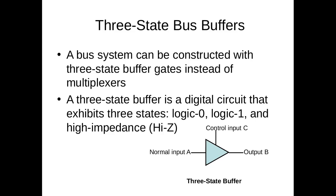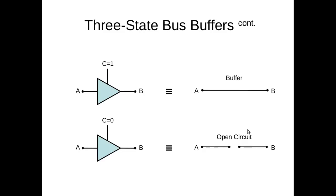A bus system can be constructed with 3-state buffer gates instead of multiplexers. A 3-state buffer is a digital circuit that exhibits three states: logic 0, logic 1, and a high impedance state. This is the diagram for a 3-state buffer with input A, output B, and control input C. If C = 1, then A and B become connected; if C = 0, the circuit becomes an open circuit.